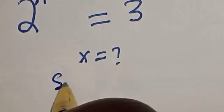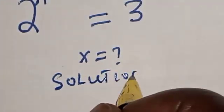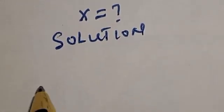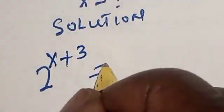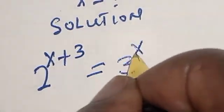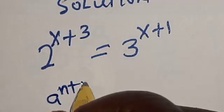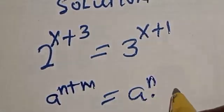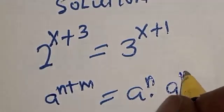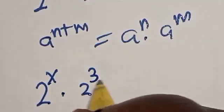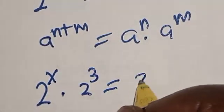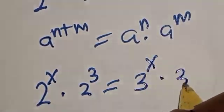Solution. The given question is 2 raised to power s plus 3 is equal to 3 raised to power s plus 1. Take note of this rule: a raised to power n plus m is equal to a raised to power n multiplied by a raised to power m. Then we have 2 raised to power s multiplied by 2 raised to power 3 is equal to 3 raised to power s multiplied by 3 raised to power 1.